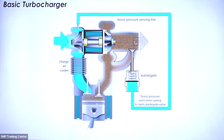As the turbine wheel rotates, it spins the turbine shaft, which in turn spins the compressor wheel. Like the turbine wheel, the compressor section is made up of two primary components: the compressor wheel and the compressor cover. The compressor's job is to compress fresh air and funnel it towards the throttle body.